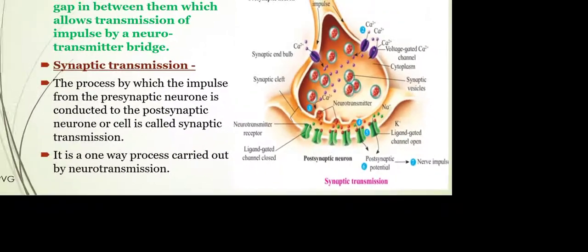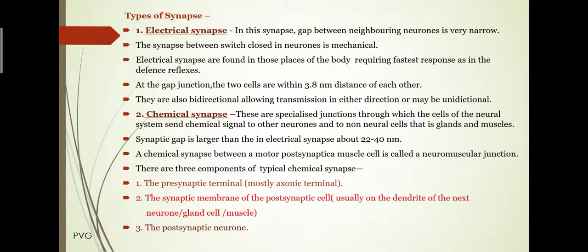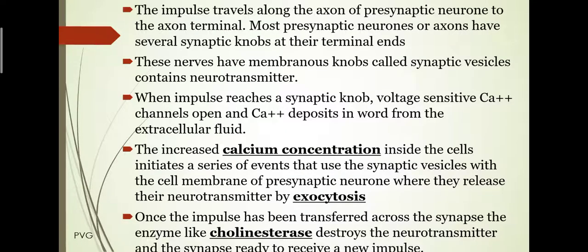When the stimulus passes and the impulse is transmitted, the cholinesterase enzyme is responsible for breaking down the neurotransmitter. After this, the next point to study is the transmission of nerve impulse and its characteristics or properties.